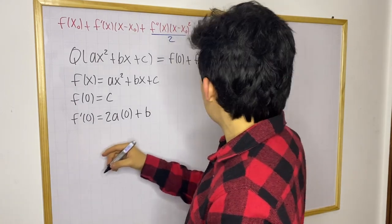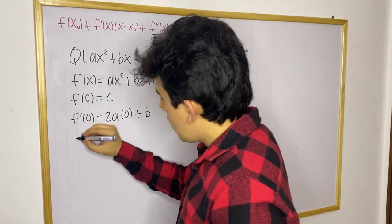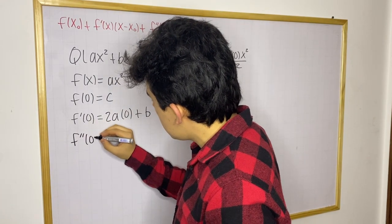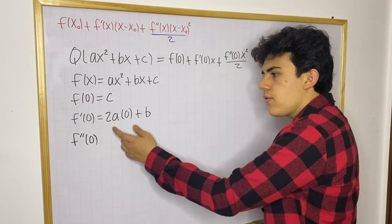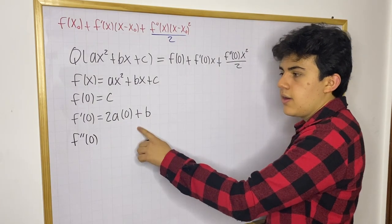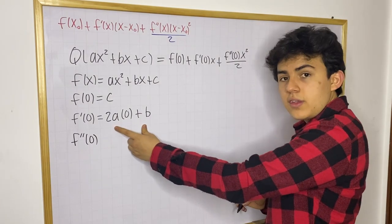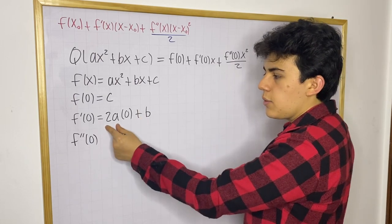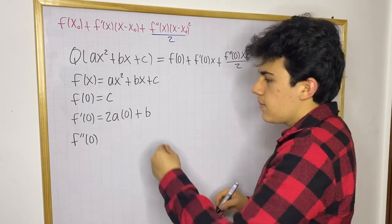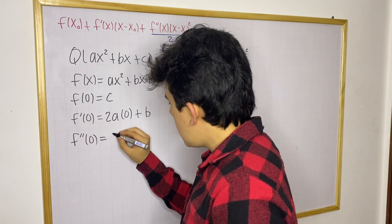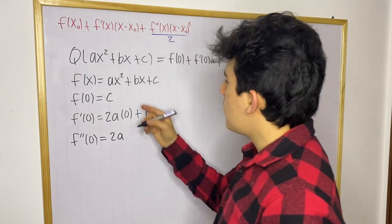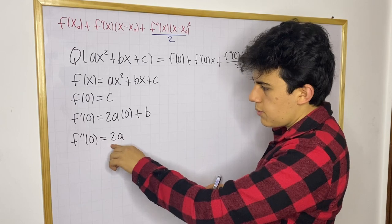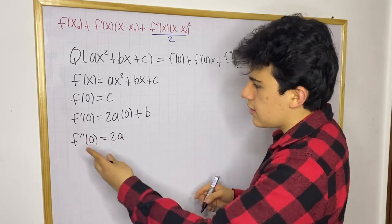Now what about the second derivative of f? We know f double prime — the first derivative was 2ax plus b, and the derivative of this linear expression is just its slope, which is 2a. So the second derivative of our parabola is just going to be the constant 2a — whatever a is, that's it.